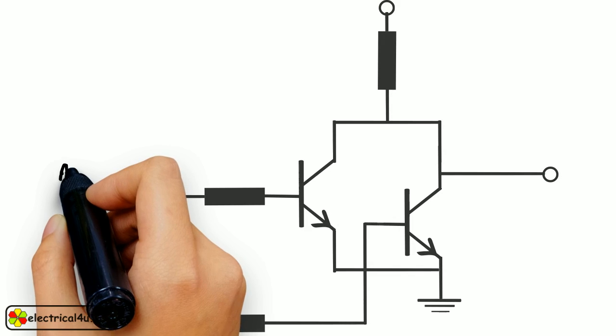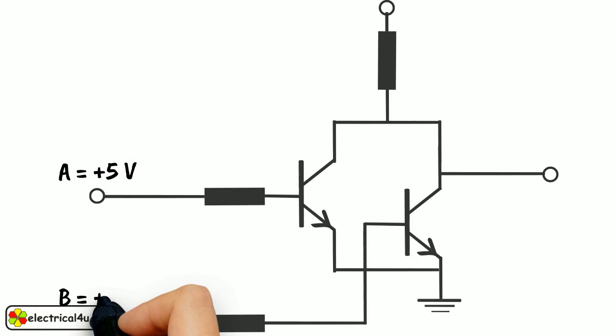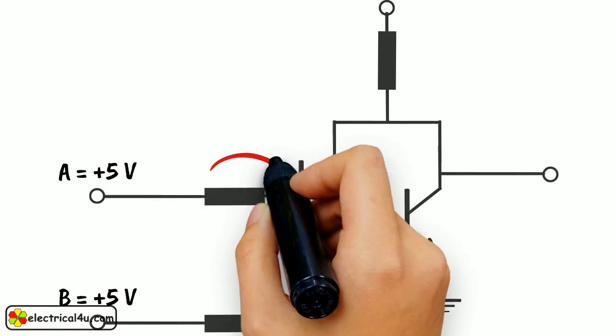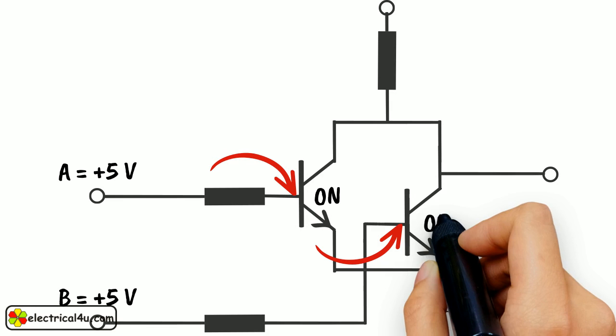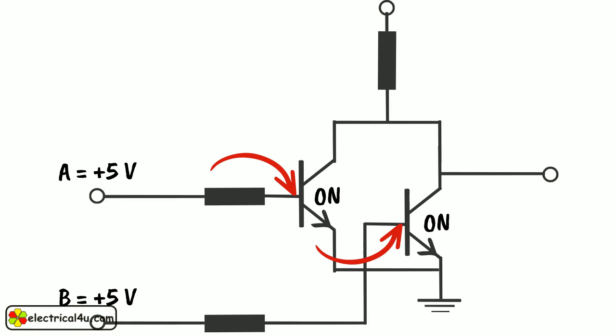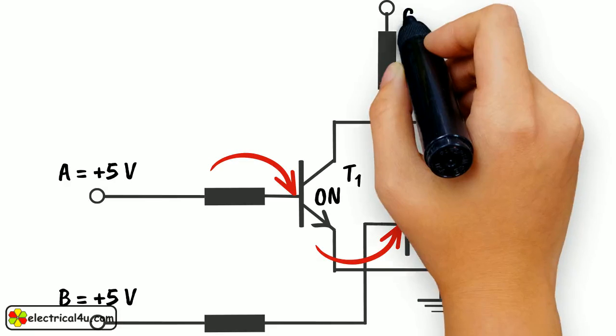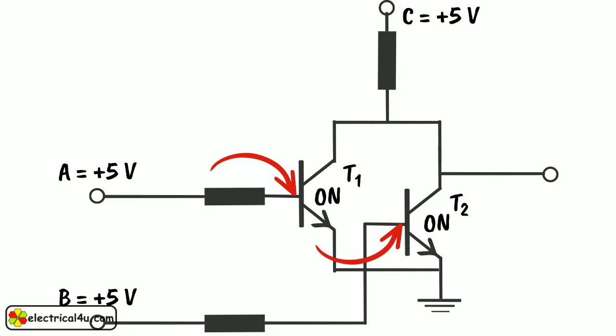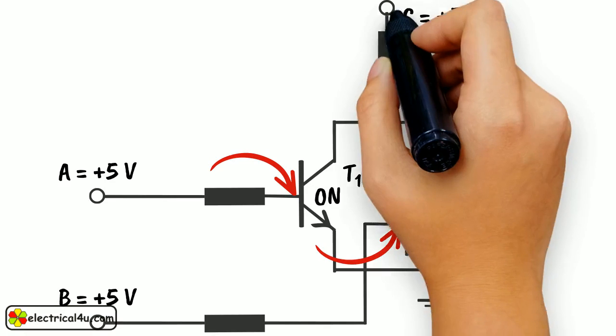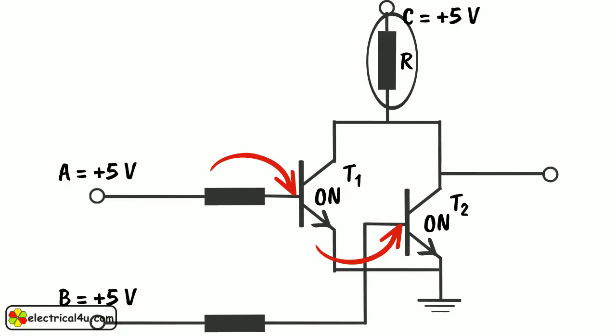In the circuit, when both A and B are given plus 5V, base of the both transistors get quite a high potential to make the transistors ON. As both T1 and T2 are in ON condition, supply voltage at terminal C gets passed to the ground through resistor R. Entire supply voltage ideally drops across resistor R and the output terminal of the circuit will not get any voltage and hence it will be at logical zero state.